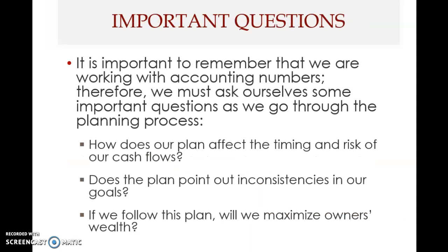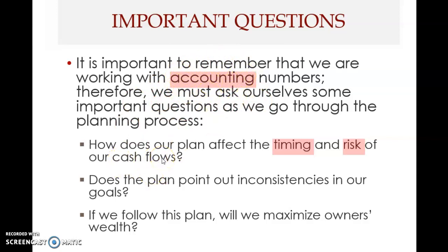An important caution: these are accounting numbers. We must be careful using accounting-based financial plans, and ask how the plan affects the timing and risk of our cash flows — because accounting numbers do not indicate this. A more rigorous financial plan must be based on cash flows and must indicate both the timing and the riskiness of those cash flows.